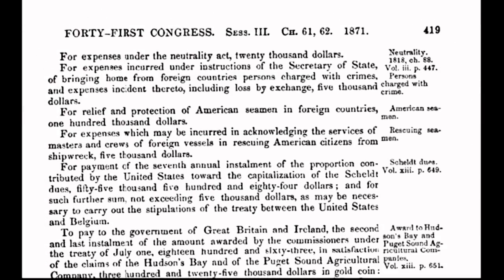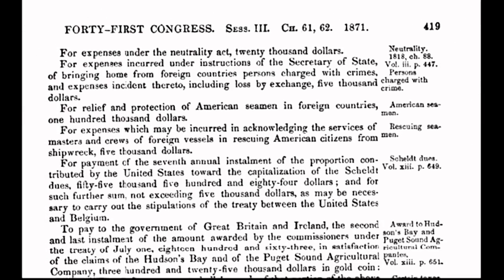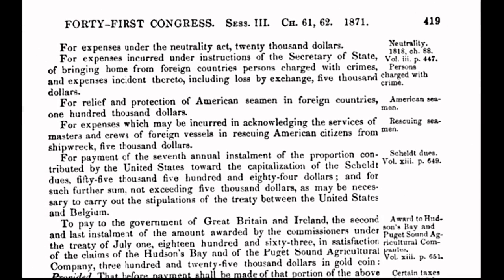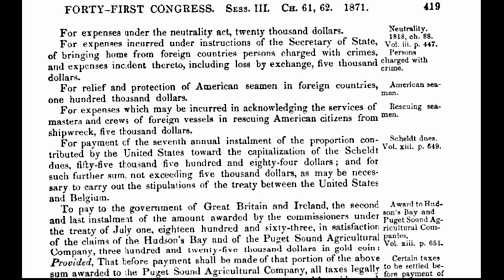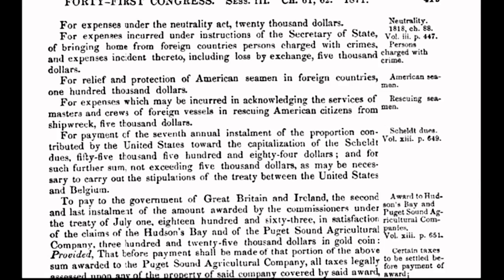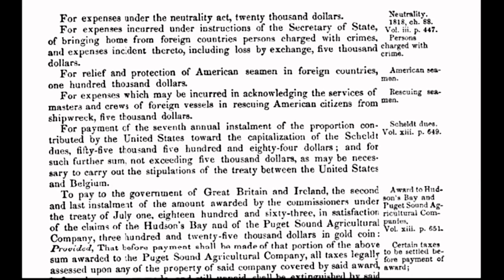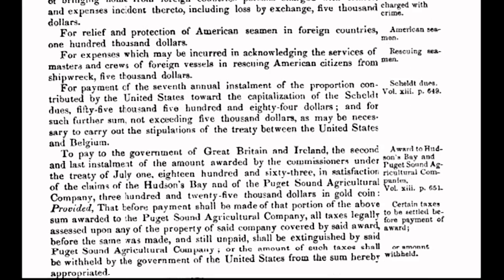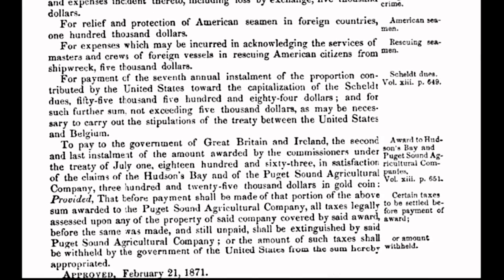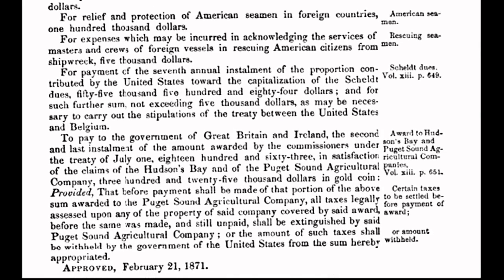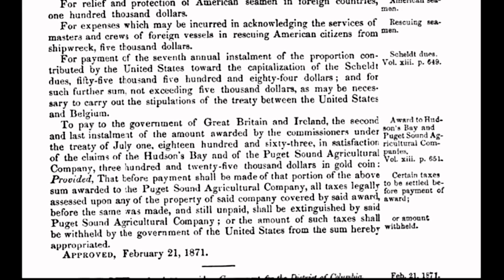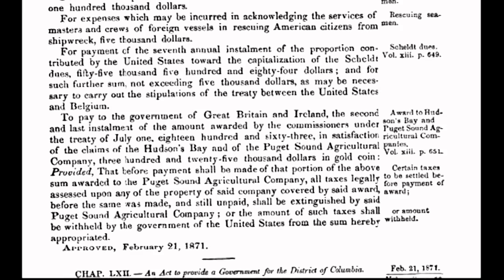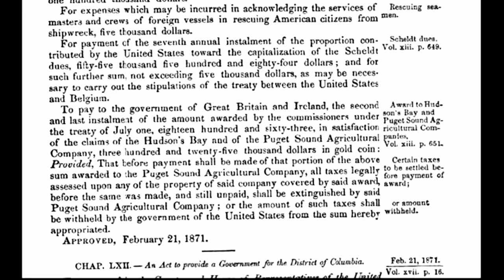In today's program, I will put the spotlight on an act that was enacted in the year of 1871 on February 21st. The Congress passes an act to provide a government for the District of Columbia, also known as the Act of 1871. When you fully understand the ramifications of the past, you will then fully understand the ramifications of the present, and you will know how to change the future. And here is where our story begins.